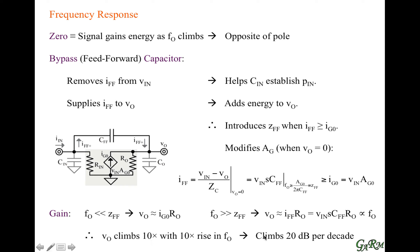That's another way of saying the output voltage increases 20 dB per decade, because rising by a factor of 10 is 20 dB and a decade is an increase in frequency of 10x. Looking at the gain plot, with log frequency on the x-axis and effective transconductance on the y-axis: at frequencies below the zero we get just the transconductance of the amplifier, and above the zero the capacitor current overwhelms the amplifier current, so the effective combined output current increases by 20 dB per decade.